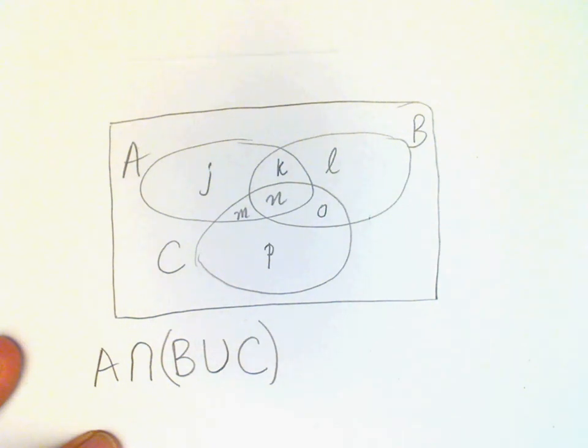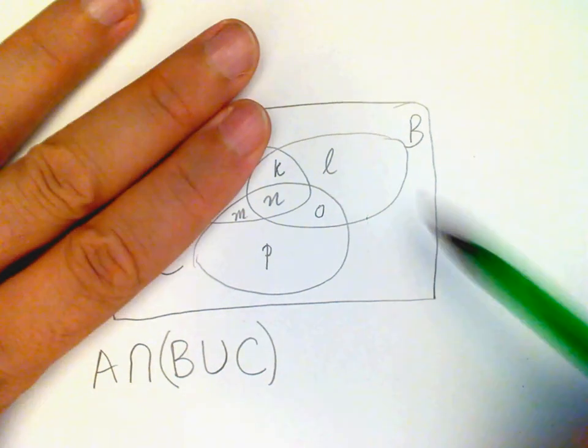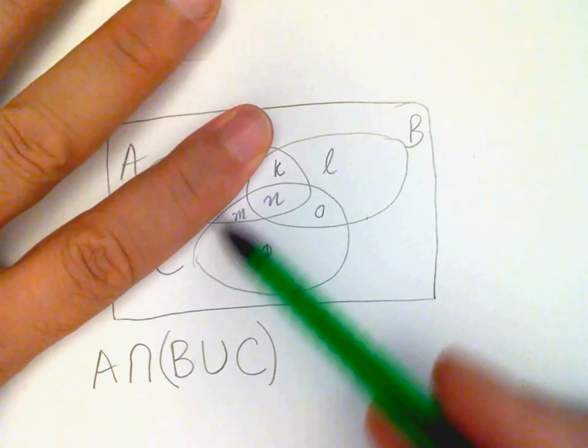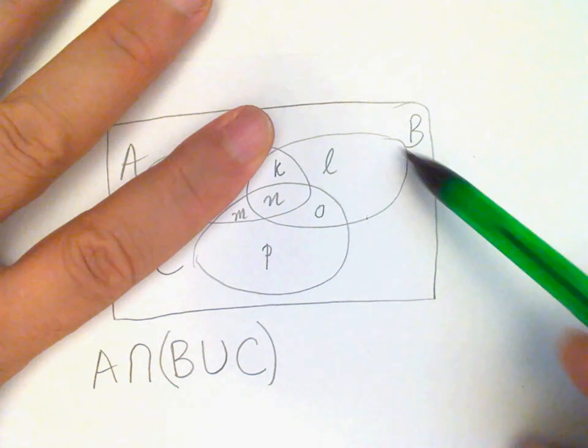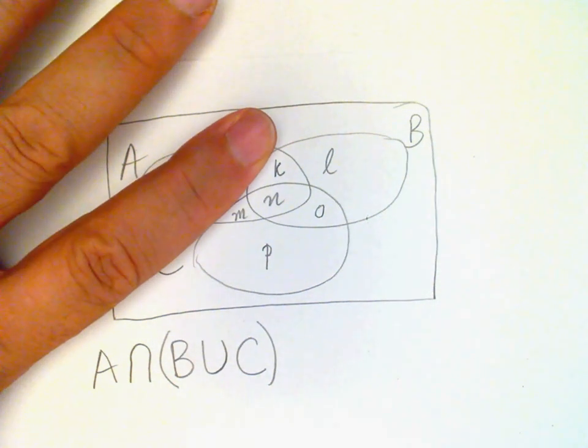So B union C is here. So all these regions here, K, L, M, N, O, P. That's B union C.